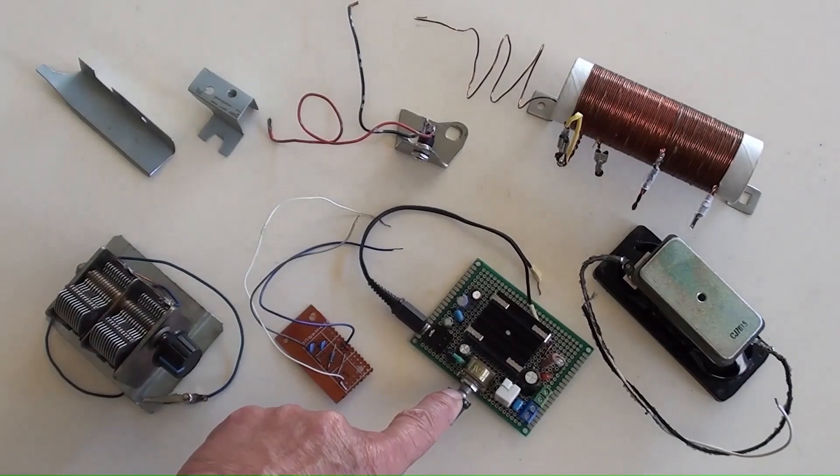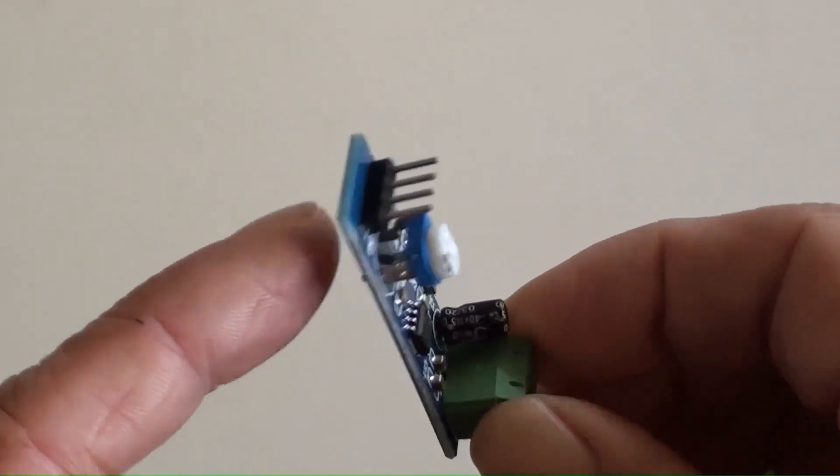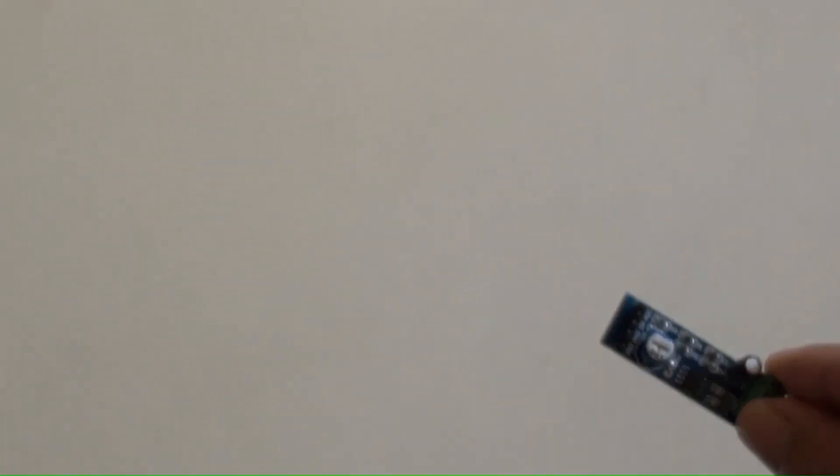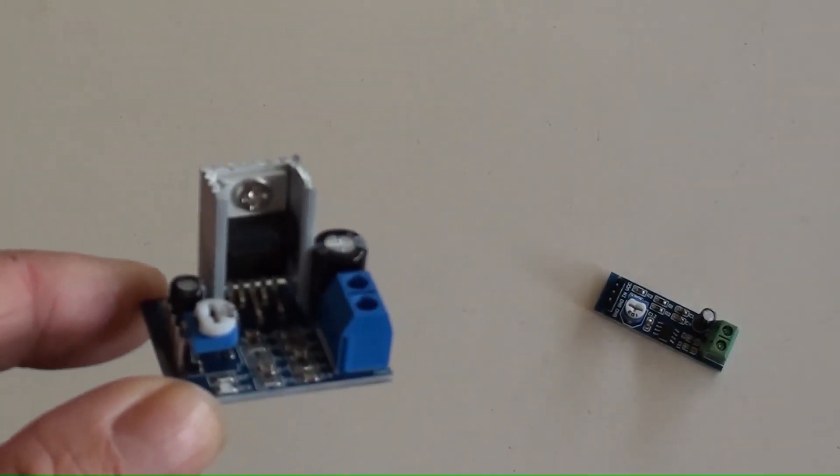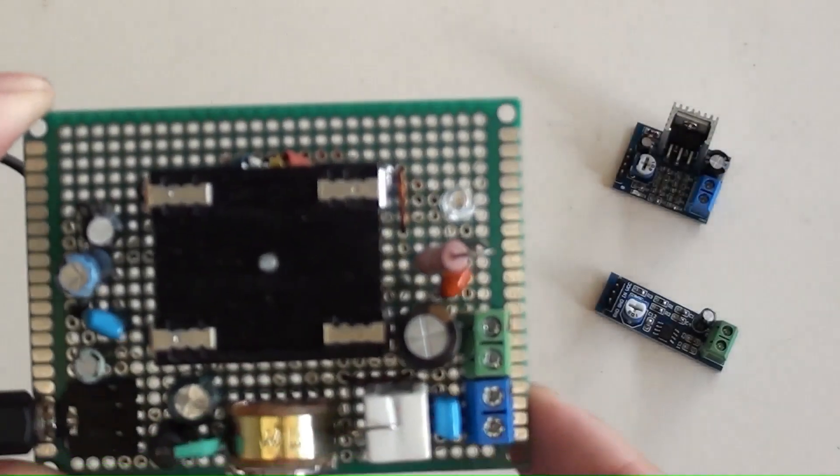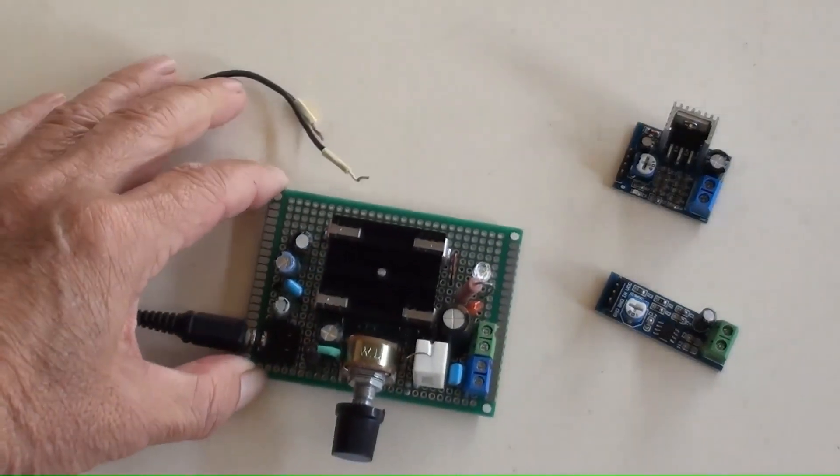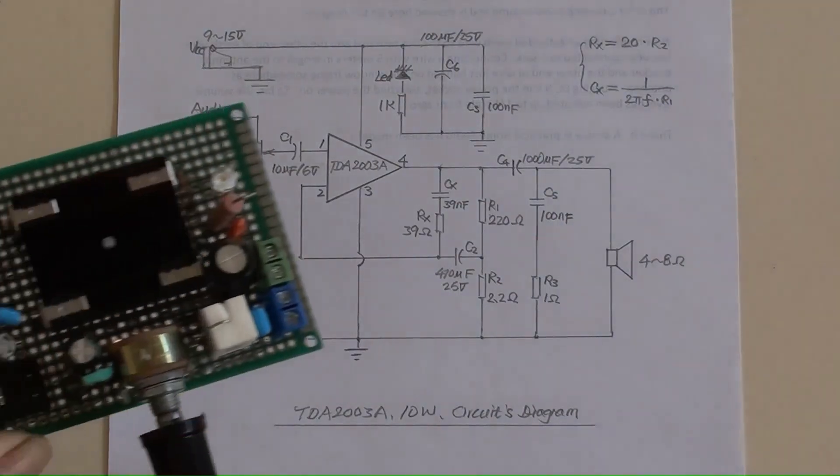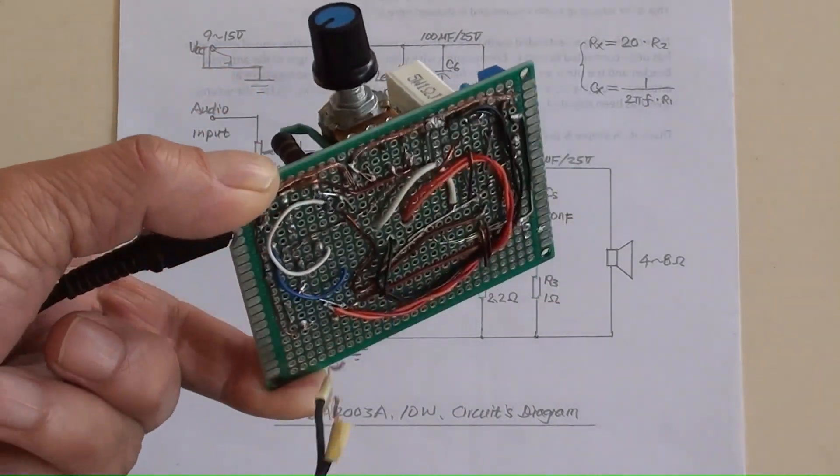This is a DIY made amplifier with 10 watt capacity. In fact, a few options are here. The amplifiers of LM386 and TDA2030 can be used from purchasing them. However, a DIY made amplifier of TDA2003A instead. The circuit's diagram is here. The output of 10 watt is not its maximum capacity.